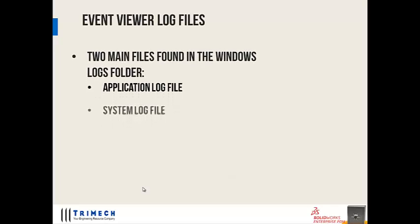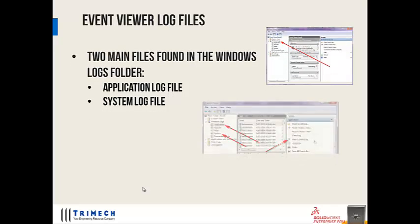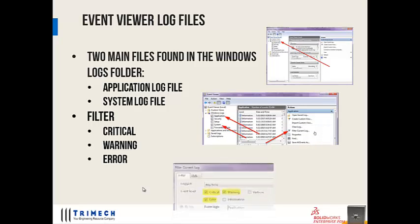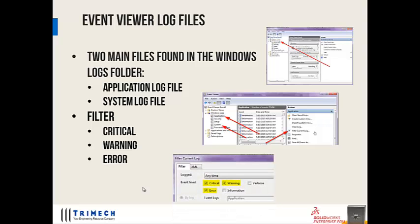The event viewer log files — there are two main files you're going to want to look at: the application log file and the system log file. Inside of the event viewer, you can expand the Windows Logs folder and click on the application log or the system log to open them up. You can also filter these log files for critical, warning, and error messages, so you don't have a whole bunch of extraneous information messages that you don't really need to see.